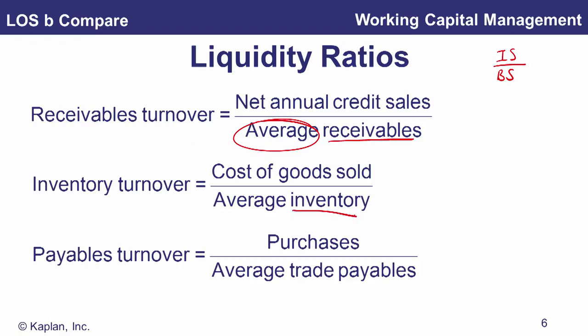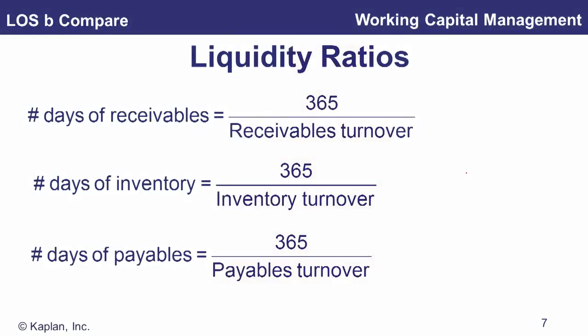It's often easier to interpret turnover ratios in terms of days. We convert a turnover ratio to a days figure by dividing 365 by the turnover ratio. So 365 divided by receivables turnover gives receivable days — for example, 30 days means customers take 30 days on average to pay. Inventory days tells you how long cash is tied up in inventory, and payables days tells you how long it takes to pay suppliers.